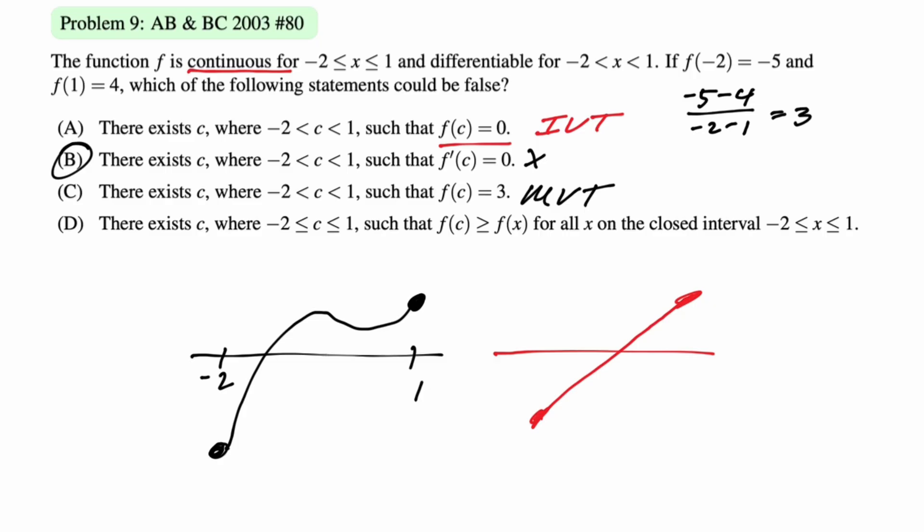But this is actually the extreme value theorem. So it says there exists a c between negative 2 and 1 such that f of c, the y value, is greater than or equal to f of x for all x on the closed interval. That's just saying that the function has a maximum. And the extreme value theorem says that a continuous function on a closed interval always has an absolute maximum and an absolute minimum. It's a really good theorem to know. It comes up in the multiple choice basically like this. And it's kind of like half of what allows you to use the candidate's test on a lot of frqs and some multiple choice questions. But anyway, this is the extreme value theorem. I definitely recommend you check it out. Let's do one more problem.